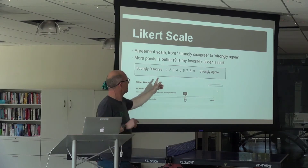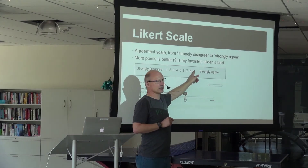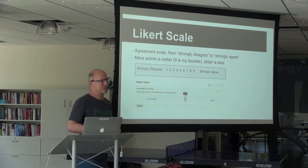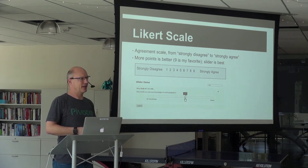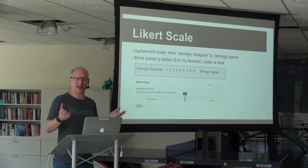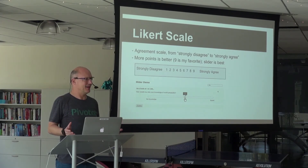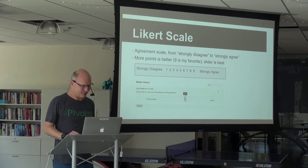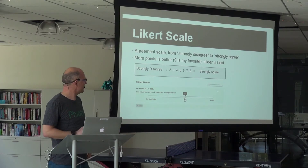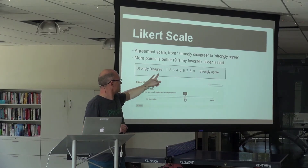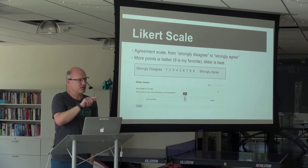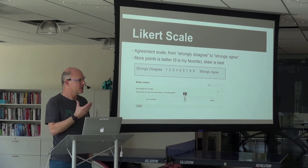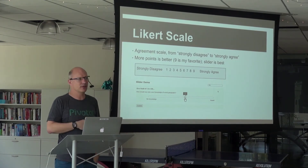People rarely use the extremes of a scale — a nine-point scale in practice boils down to a seven-point scale. And a yes/no/maybe scale basically becomes a 'maybe' answer — you'll get 90% maybes. So try nine-point scales. Sliders are more work for participants, but on some questions they're really, really useful.